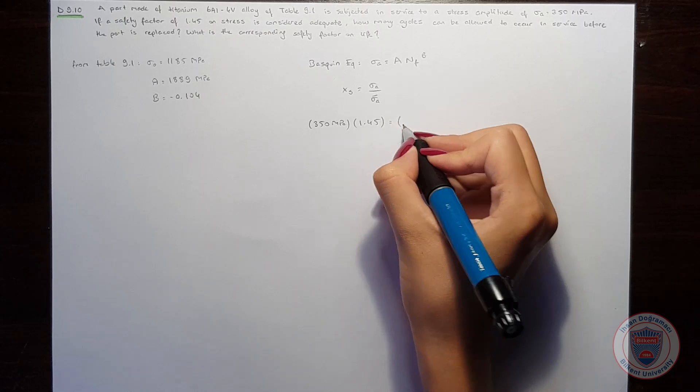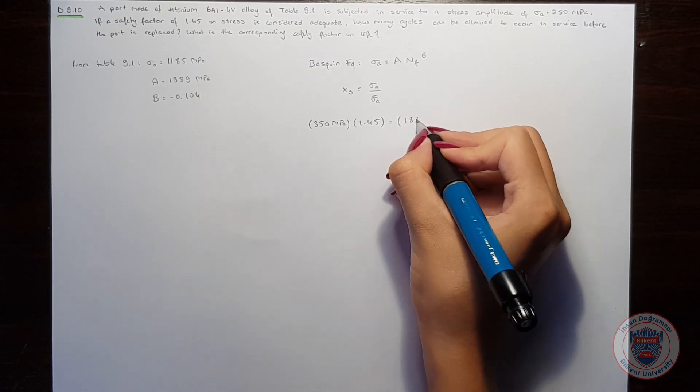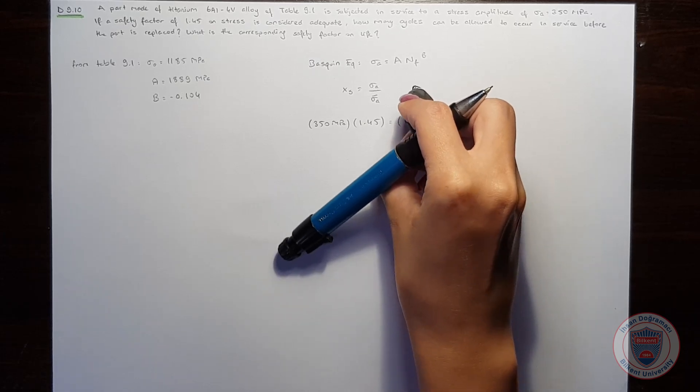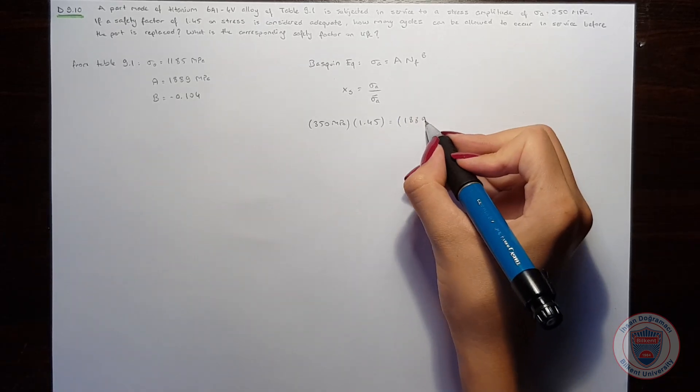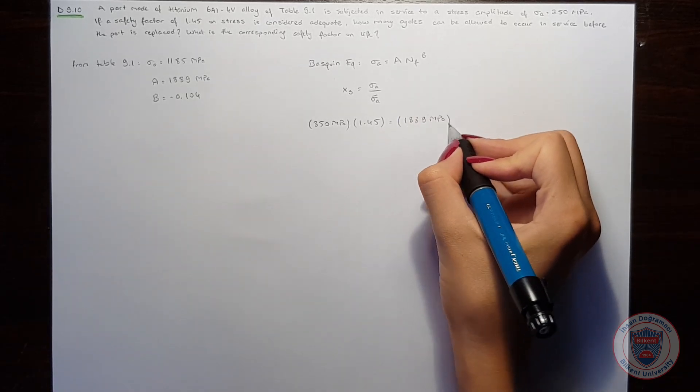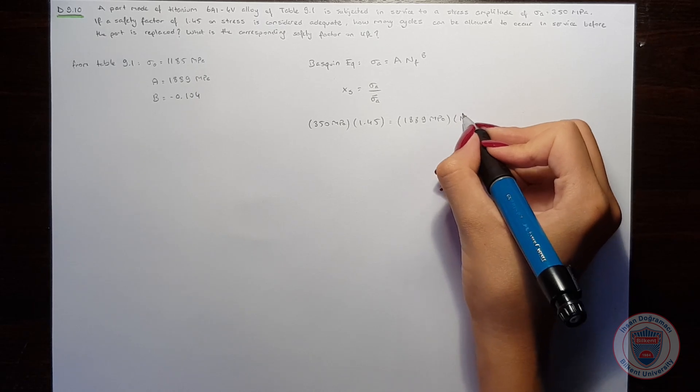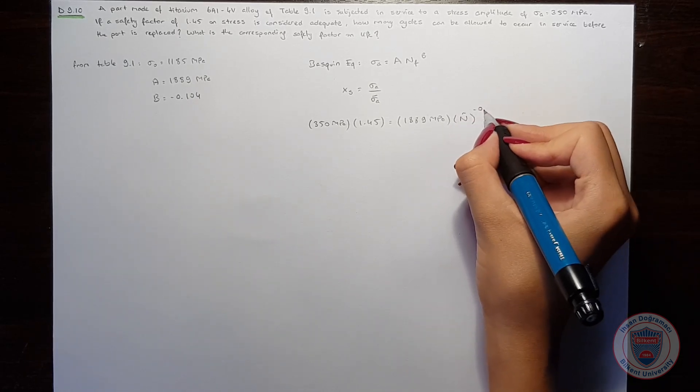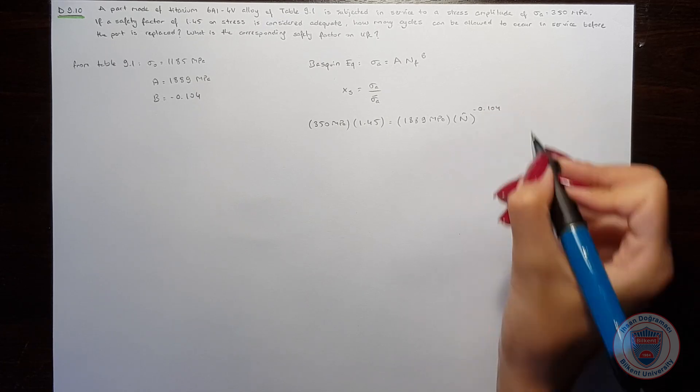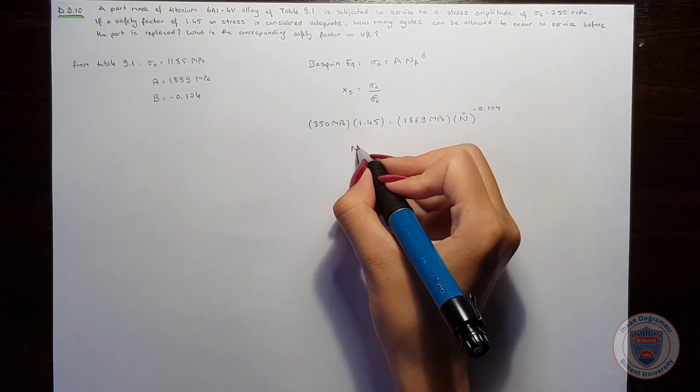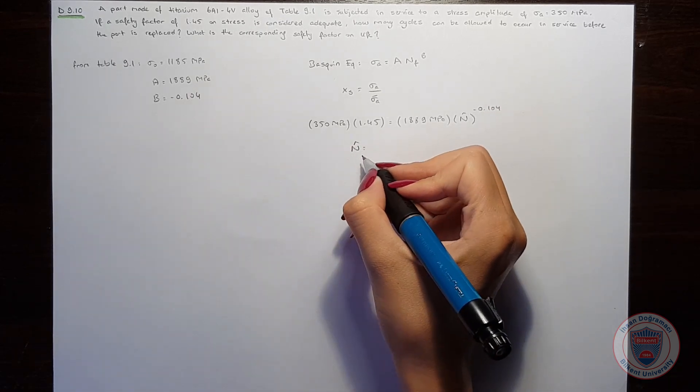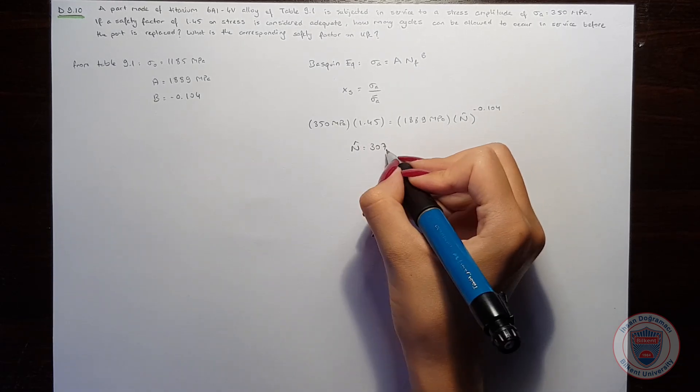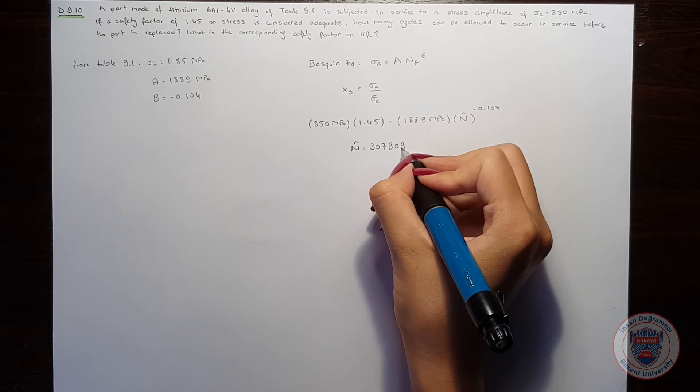will be equal to 1889 MPa times the number of cycles to the power of minus 0.104. So we will obtain the number of cycles as 307,909.